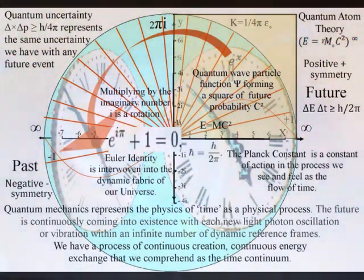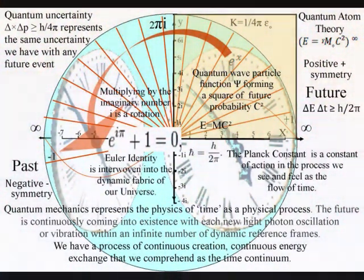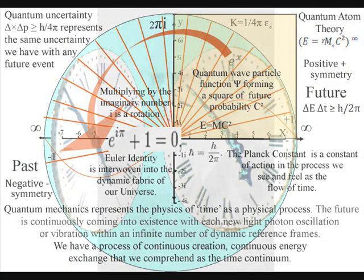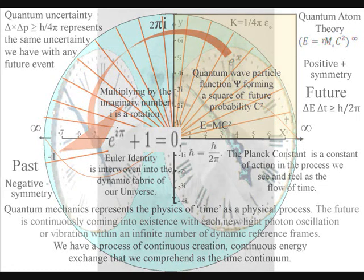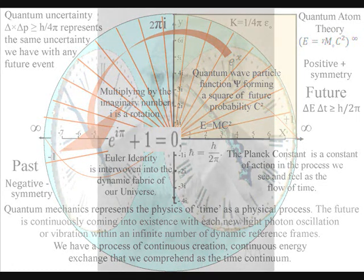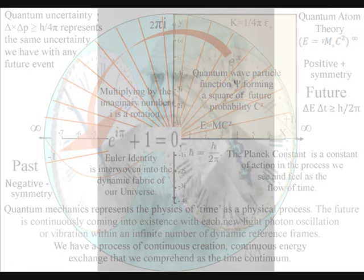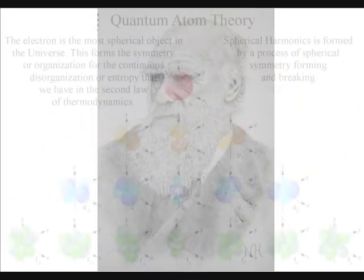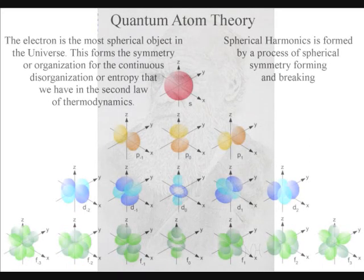This theory also explains the driving force and physical structure for the formation of the first cell life that is needed for Charles Darwin's theory of evolution. Life is the most advanced part of one universal process which is outside of nature and in the domain of physics.